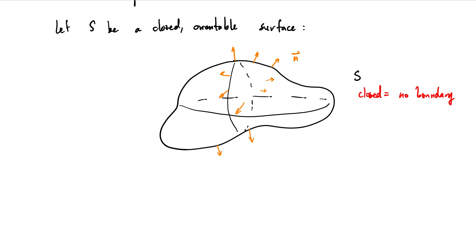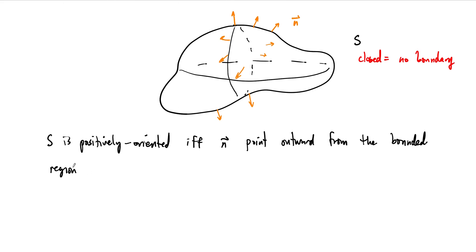And as long as our vectors are pointing outward from that region, then we say that this is positively oriented. So this is another definition: S is positively oriented if and only if the Gauss map or the unit normal vectors n point outward from the bounded region enclosed by S. Now if they point inward we say it's negatively oriented, and we can just reverse the orientation if necessary.